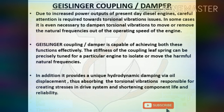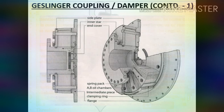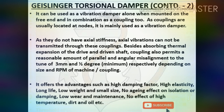The stiffness of the coupling leaf spring can be precisely tuned for a particular engine to isolate or move harmful natural frequencies. It provides unique hydrodynamic damping via oil displacement, absorbing torsional vibrations responsible for stresses in the drive system and shortening component life. The Geislinger coupling can be used as a vibration damper alone when mounted on the free end, and in combination as a coupling. As couplings are usually located at nodes, it is mainly used as a vibration damper. It permits a reasonable amount of parallel and angular misalignment. Advantages include high damping factor, high elasticity, long life, low weight, small size, no aging effect, low wear and maintenance, and no effect from high temperature, dirt, or oil.